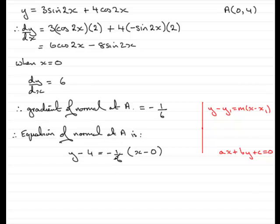I'm going to multiply through by 6 to both sides, so therefore we get 6Y minus 24 equals minus X. Now I'm going to add X to both sides, so I get X plus 6Y minus 24 equals 0.